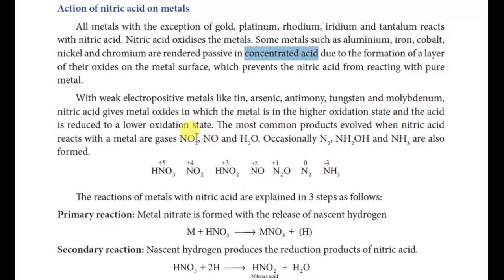NO2 is a red-brown gas produced with concentrated nitric acid. Nitric oxide (NO) gas is produced with dilute nitric acid. Occasionally, nitrogen gas (N2) is also produced. Other possible products include hydroxylamine and, very rarely, ammonia.